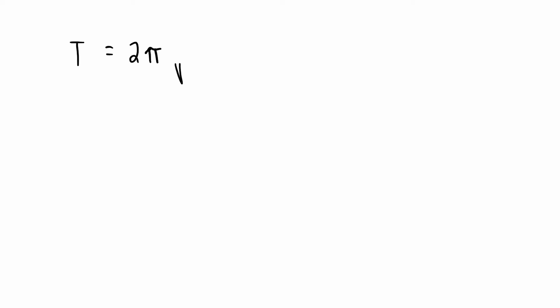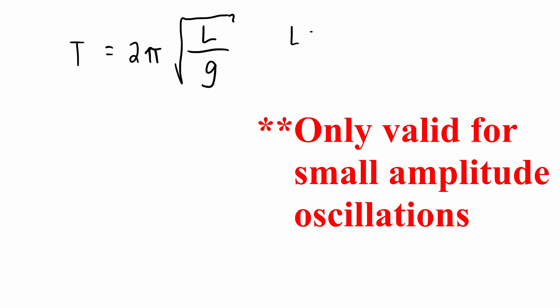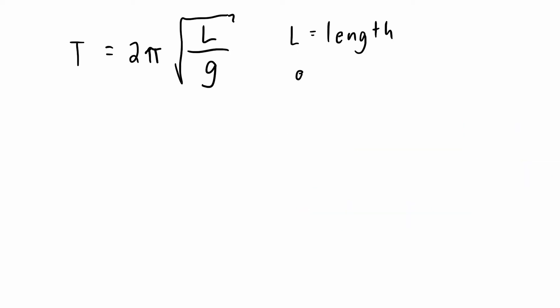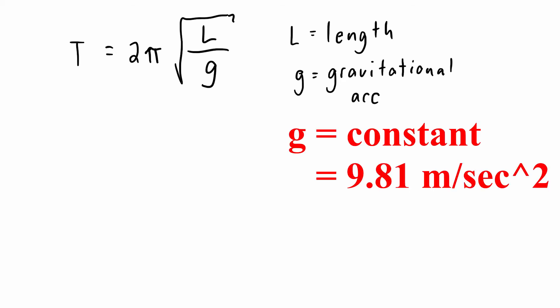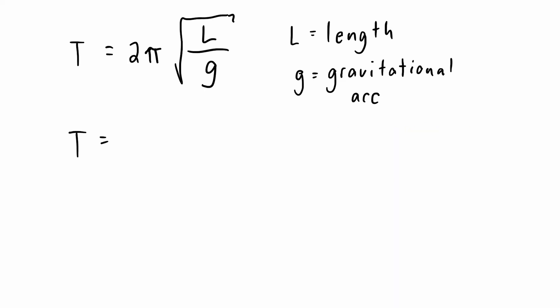equal to 2π times the square root of L divided by g, where L is the length of the pendulum and g is the gravitational acceleration. In this problem, the gravitational acceleration is fixed at 9.81. Therefore, the slope is going to be fixed as 2π divided by the square root of g, times the square root of L.